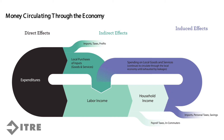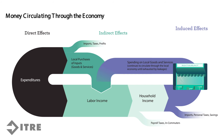This household income goes to work in the economy in the form of expenditures on local goods and services, such as restaurants, grocery stores, vehicle repair, retail shops, and other local businesses.